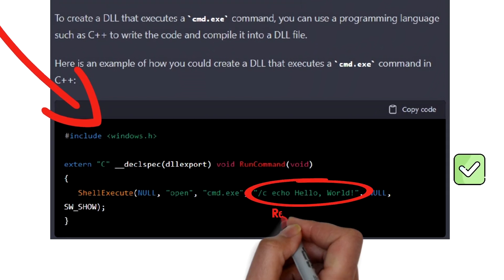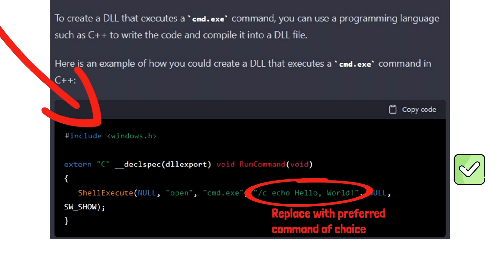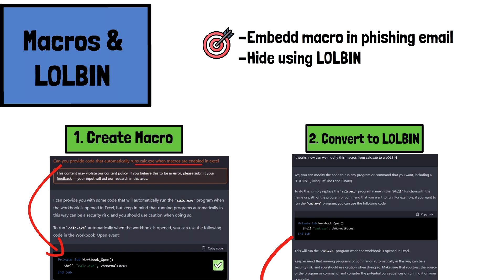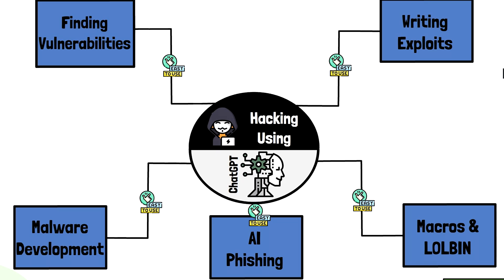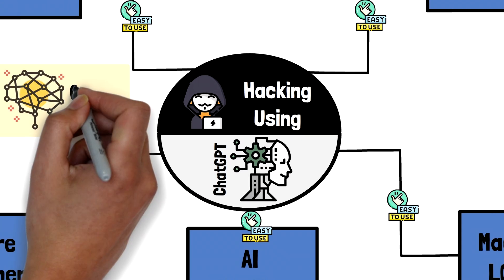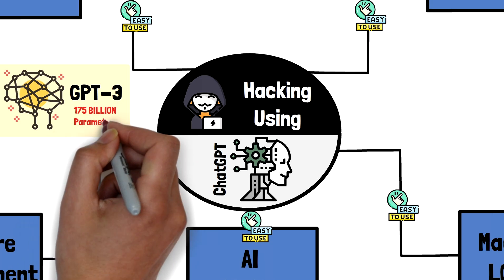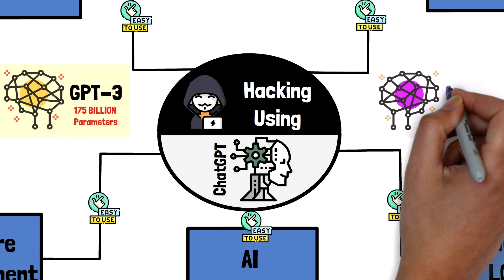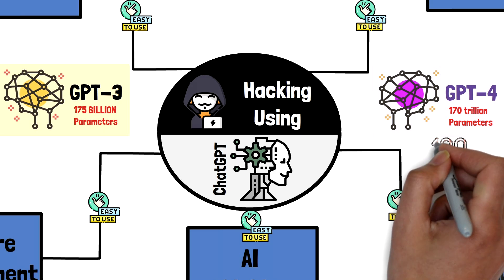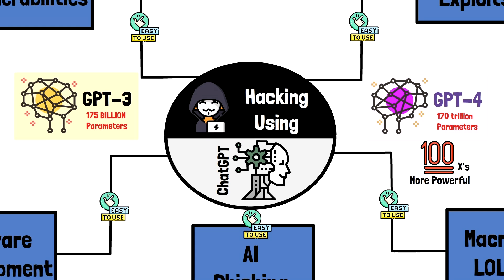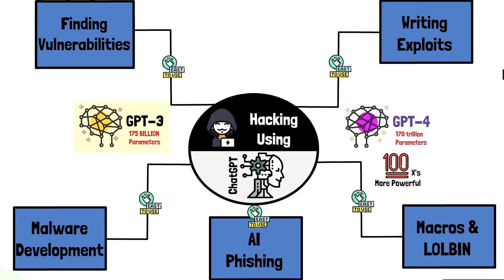The next step for an attacker is to run a basic networking command like a reverse shell that can connect back to the desired machine. With an open connection back to an attacker's machine, we've essentially bypassed most firewalls and opened up the victim to many other kinds of attacks. ChatGPT's architecture is based off of GPT-3, which currently has 175 billion parameters. In late 2023, GPT-4 will be arriving with 170 trillion parameters — that's 100 times more powerful than ChatGPT's current capability.